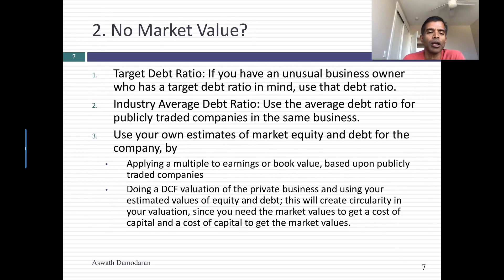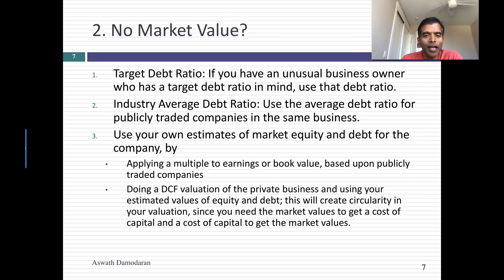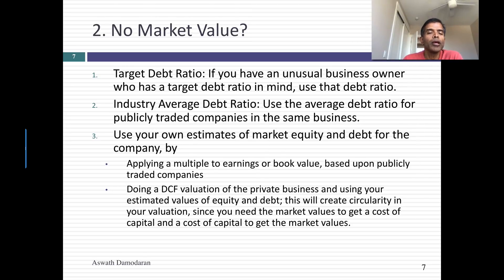What do you do about the fact that you have no market value? There are three fixes. The first is you can ask the owner of a private business what their target debt ratio is. To be honest, I've never been able to find a private business owner who can give me a number I can actually use. But once in a while, a private business owner might say their target debt ratio is 25% — make sure that's in terms of overall value. There is also a scenario where this might work simply: if the owner says they hate debt and will never borrow money, the target debt ratio is 0% and your life got a lot simpler.